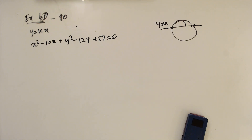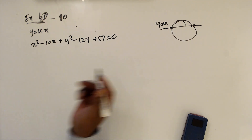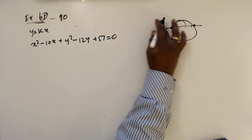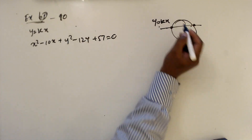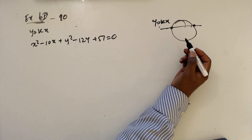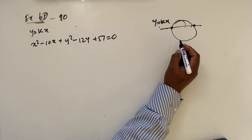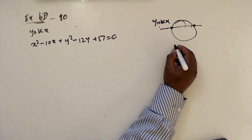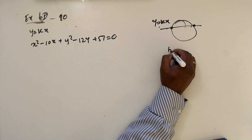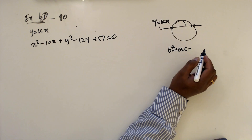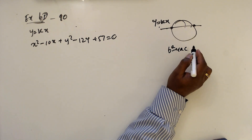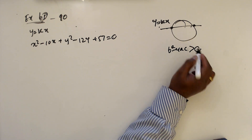Question number 10. y = kx intersects with the circle at two distinct points. When you solve, you will get a quadratic equation. We can say that b² - 4ac has to be greater than 0 to have two distinct intersection points.